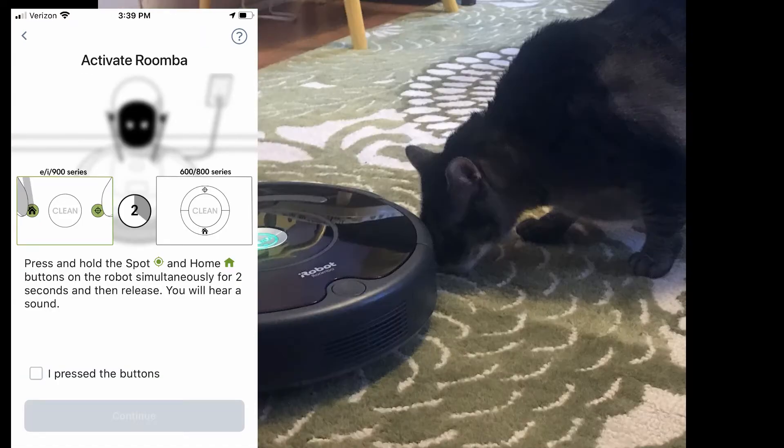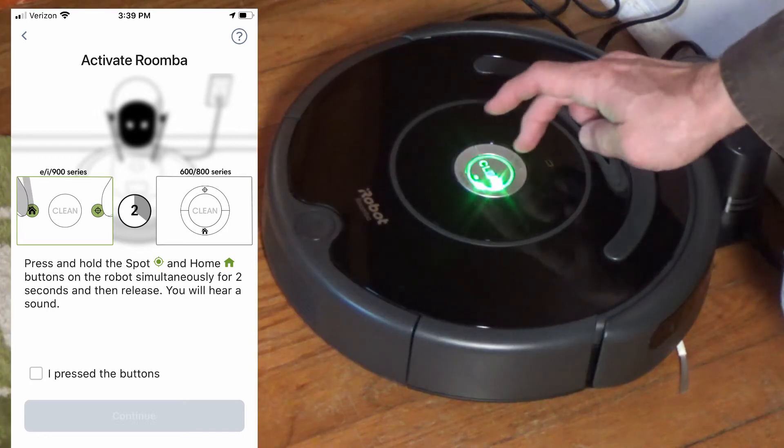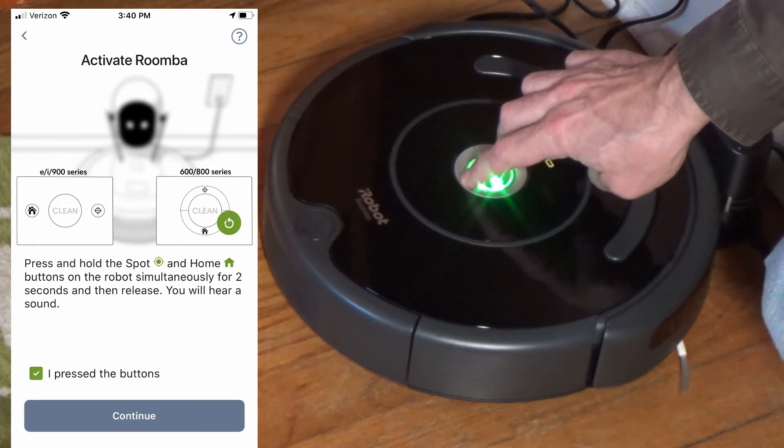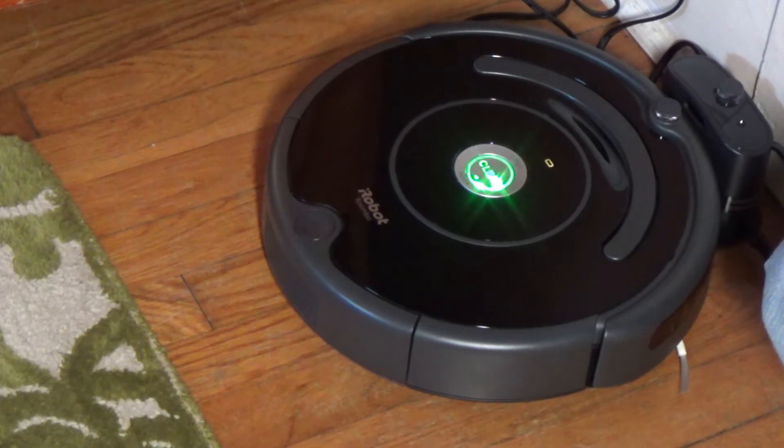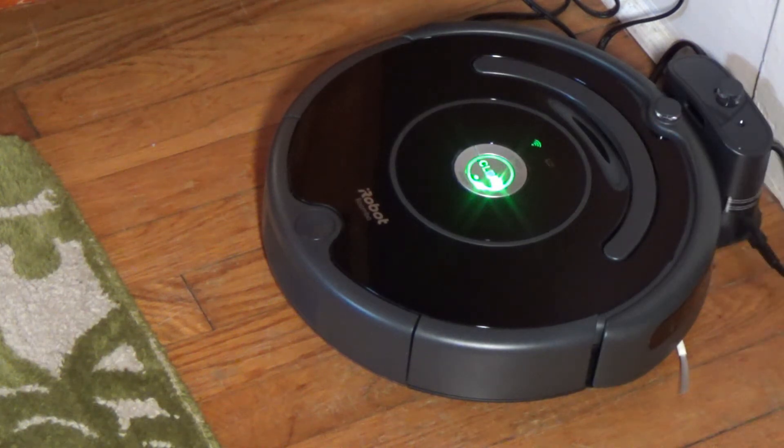You are going to press down and hold your two buttons on your device. Now that you have pressed these two buttons on your vacuum, you have now connected to your Wi-Fi. You will be able to control your vacuum with the app.